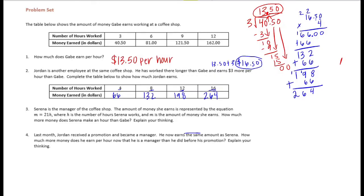Number 3, Serena is the manager of the coffee shop. The amount of money she earns is represented by the equation M equals 21H, where H is the number of hours Serena works, and M is the amount of money she earns. How much more money does Serena make an hour than Gabe? Explain your thinking.